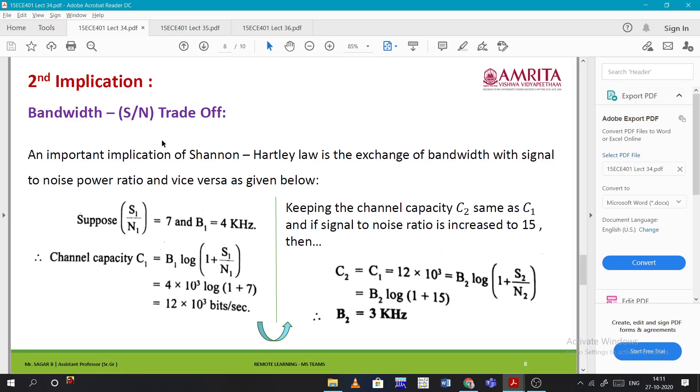Now coming to the second implication - bandwidth and S/N ratio trade-off. Initially he's taking some random values: S/N = 7 and B₁ = 4 kHz, and we got channel capacity as 12 kilobits per second. If we want to have the same capacity with different S/N values, we increase S/N to 15 and find the bandwidth - it got decreased.